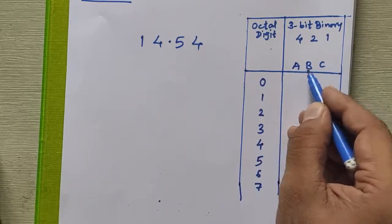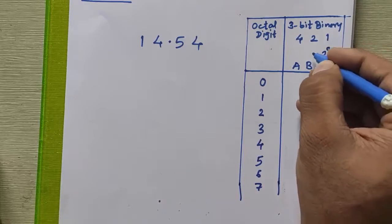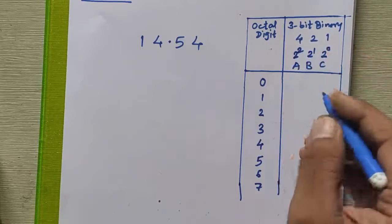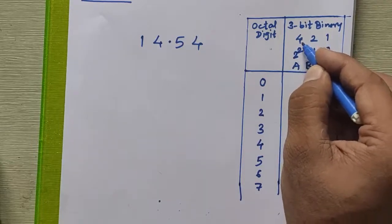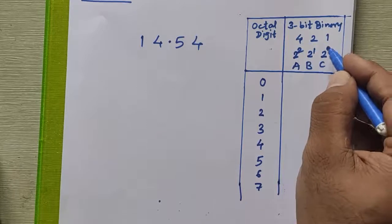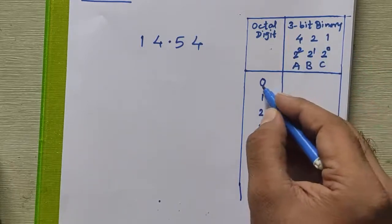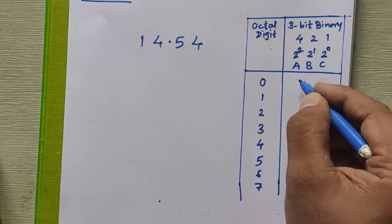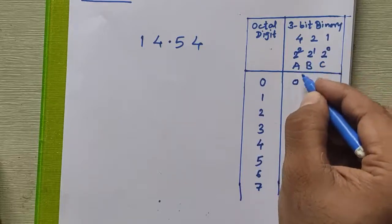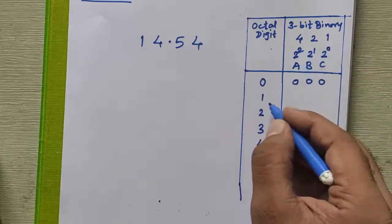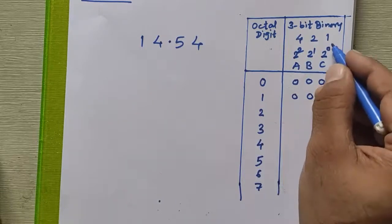The three bits use a 4-2-1 positional system: the unit place is 2 raised to 0 (which is 1), the next is 2 raised to 1 (which is 2), and the next is 2 raised to 2 (which is 4). So octal uses a 4-2-1 system. To represent zero in three-bit binary, write 000 — all bits are zero, and they sum to zero. For one, it is 001, which sums to one.